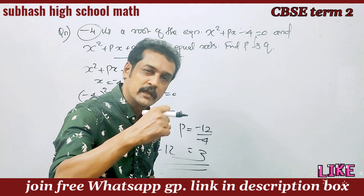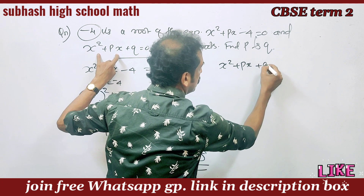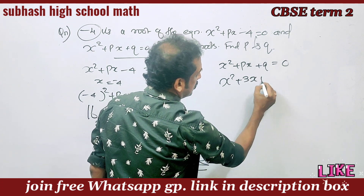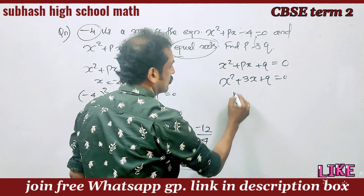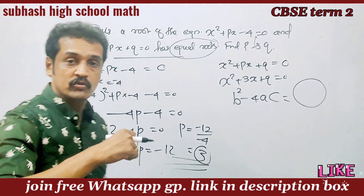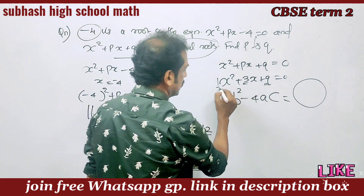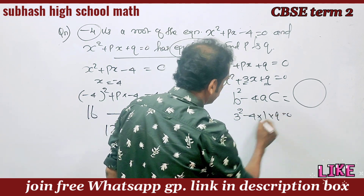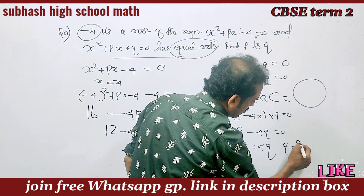Second condition: the equation x squared plus px plus q equals 0 has equal roots. For equal roots, the discriminant b squared minus 4ac equals 0. Here a = 1, b = p = 3, and c = q. So 3 squared minus 4 times 1 times q equals 0, that is 9 minus 4q equals 0, giving 9 equals 4q, so q equals 9 by 4.